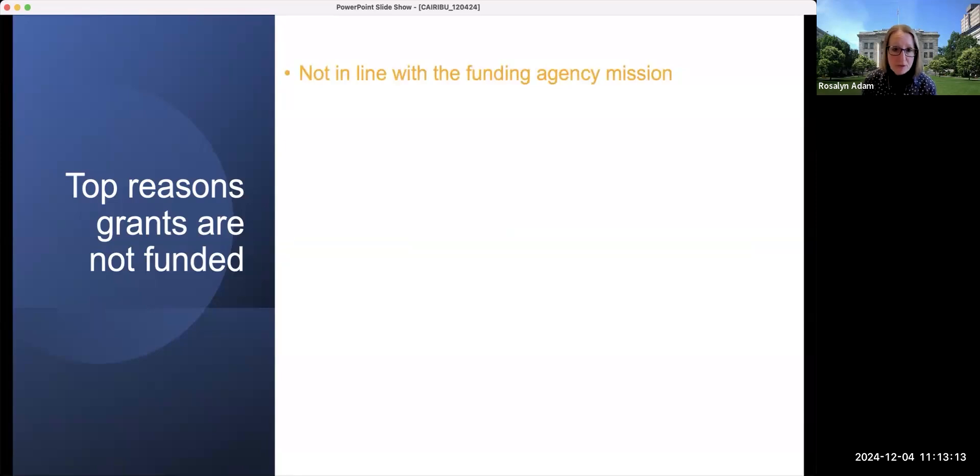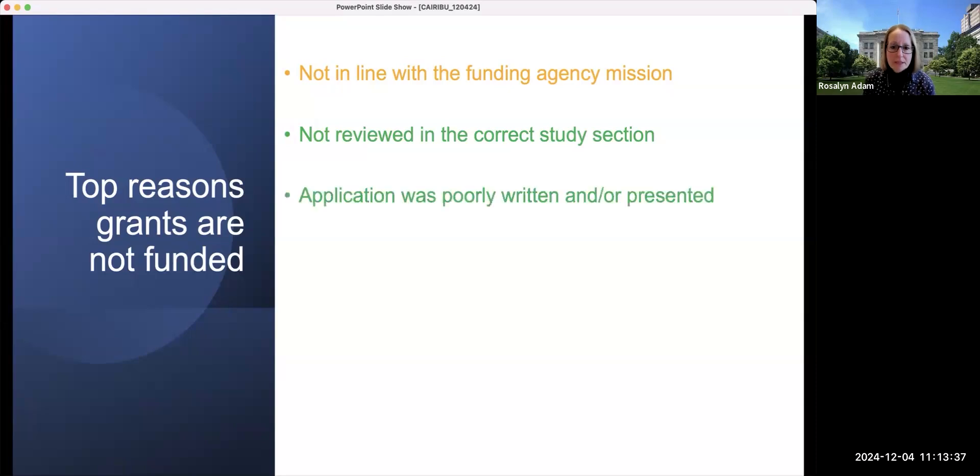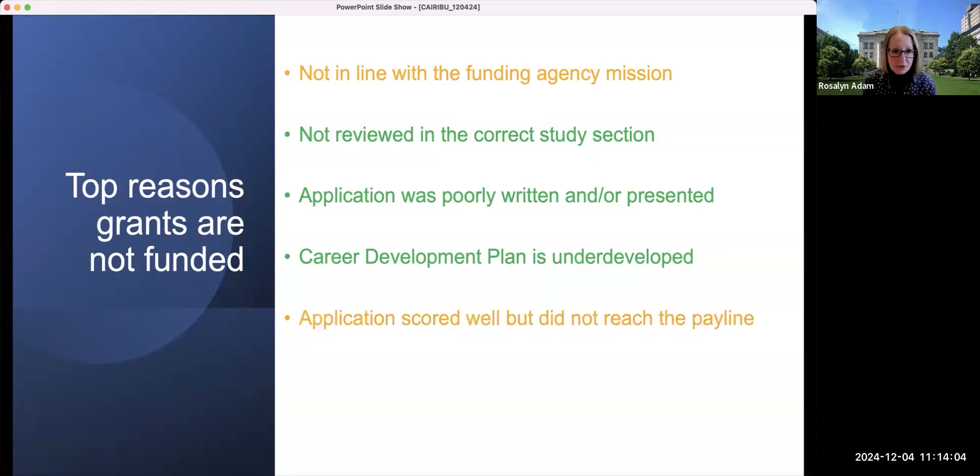It's possible that the work that you are proposing is not in line with the mission of the funding agency, although hopefully this is something that would be apparent before you ever submit the grant. Very occasionally, there is a concern that your proposal was not reviewed in the correct study section, although I would argue this is a relatively rare reason that the grant does not receive a fundable score. Perhaps more common, the application was poorly written or poorly presented, and this is a very easy criticism for a reviewer to make. For career development awards in particular, one major reason grants receive lower scores is that the career development plan is underdeveloped. And the last reason that grants are not funded is that your application scored well, but it simply didn't reach the pay line.